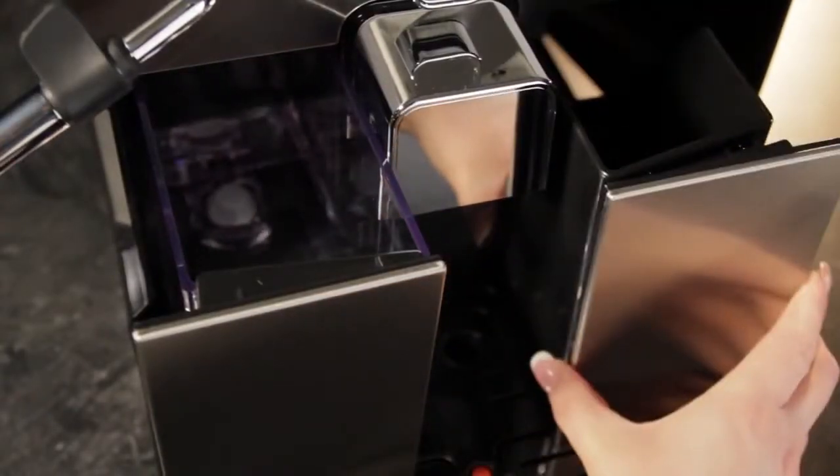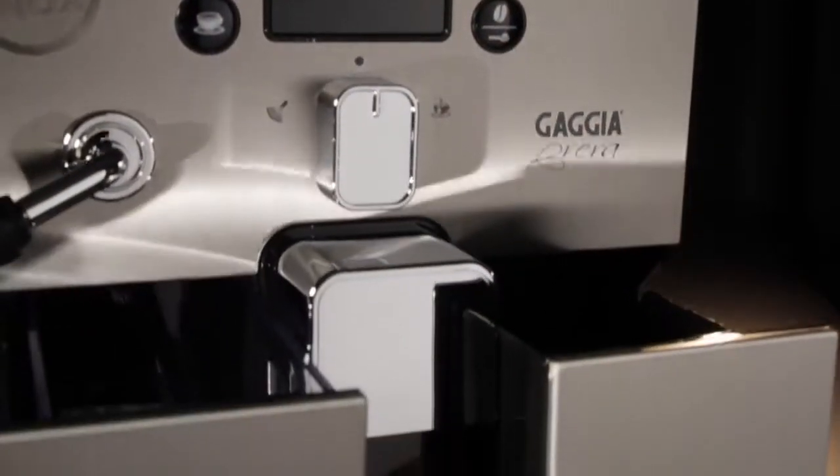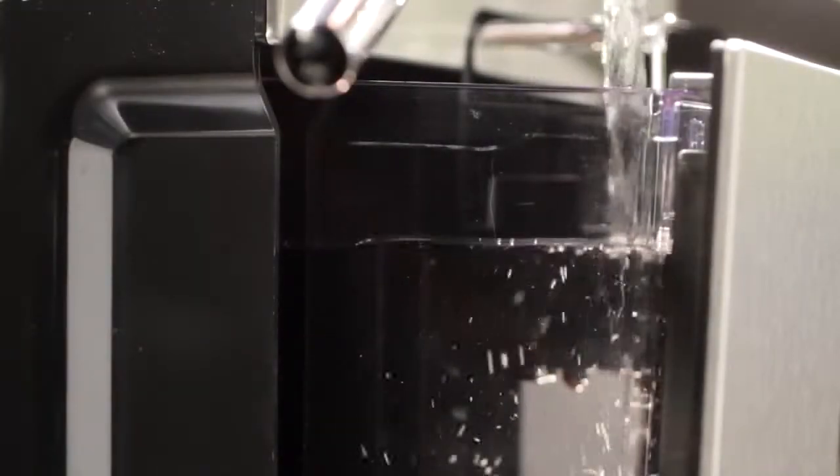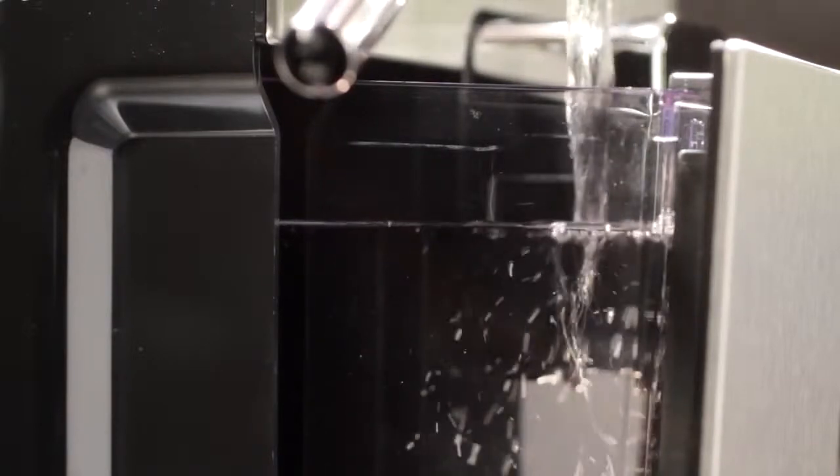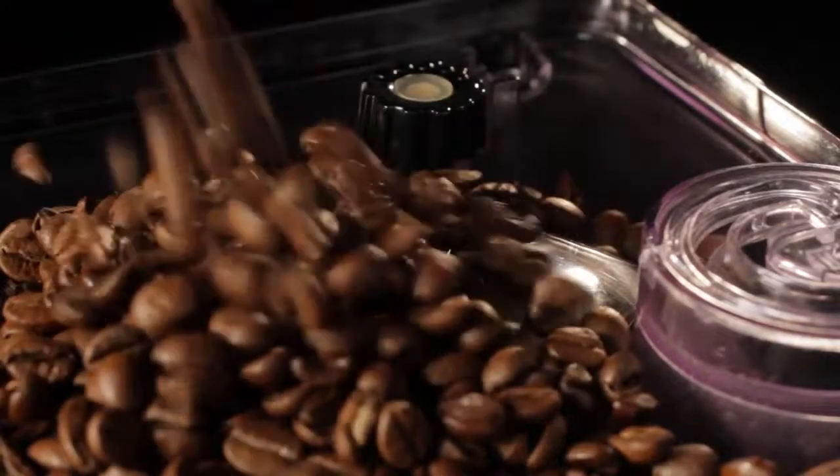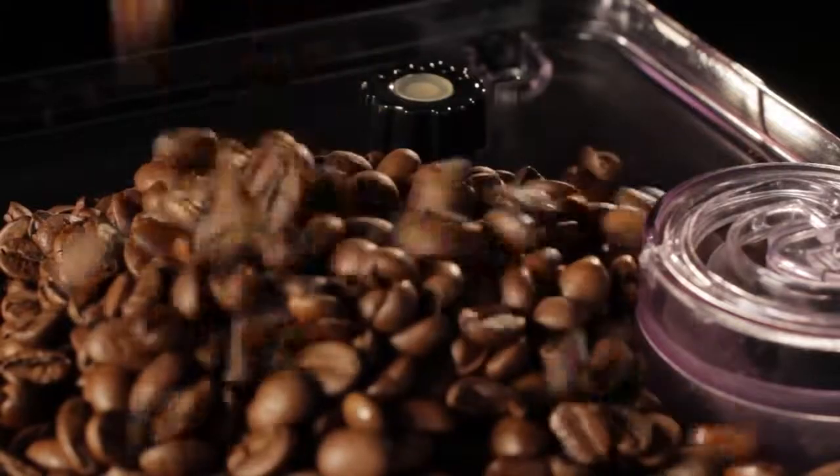The front-loading reservoir and drip drawer are perfect in a kitchen like mine. The fact that I don't have to pull it out from under my counter every time it needs more water is fantastic. And the bean hopper is airtight and holds a ton of coffee so I'm not constantly refilling it.